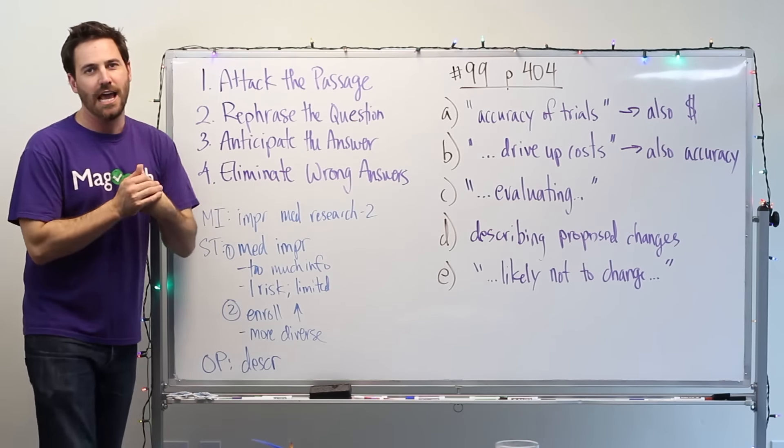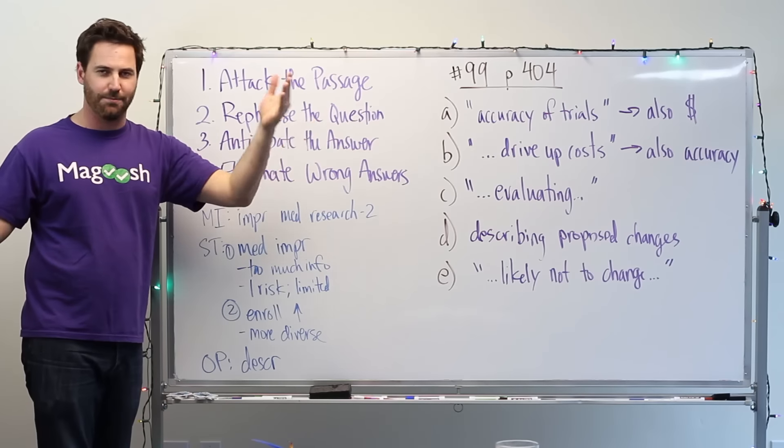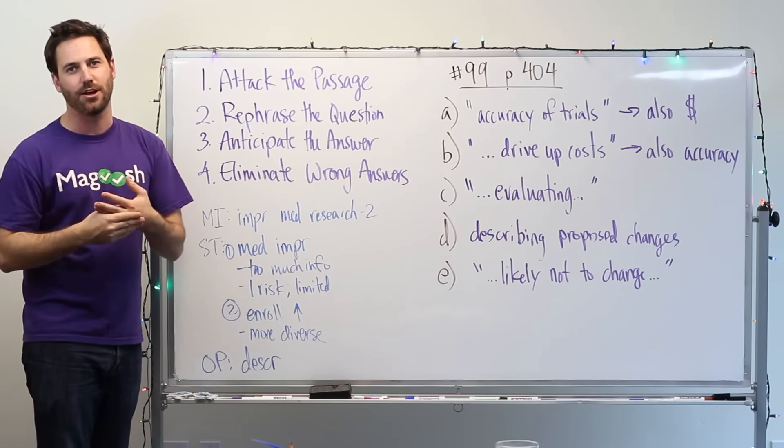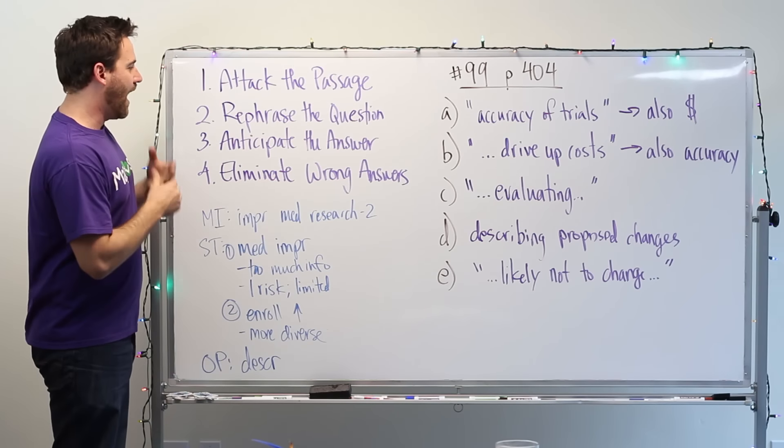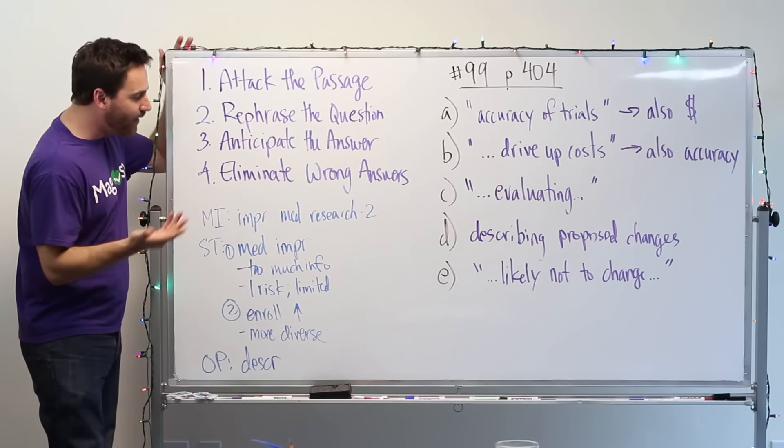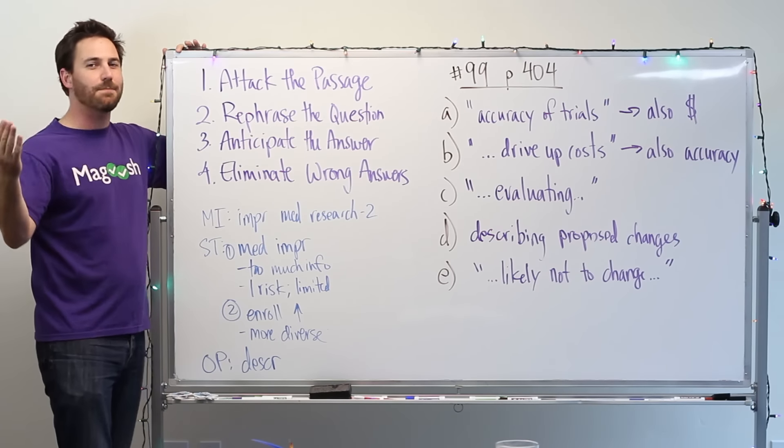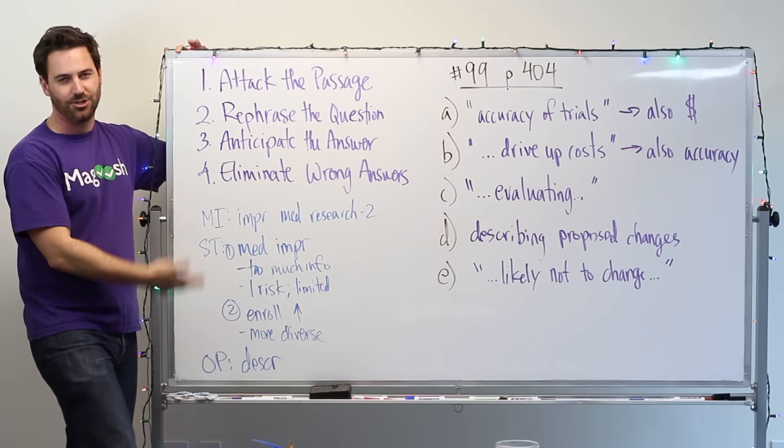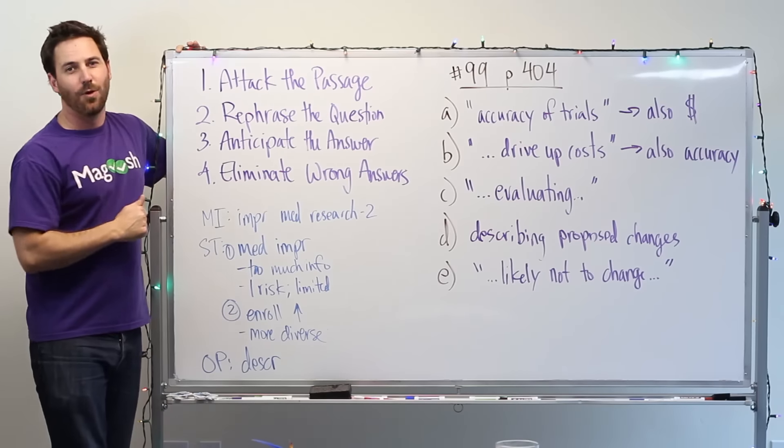Now we want to rephrase the question. Question number 99 is very simple to rephrase. It's what is the primary purpose of the passage? I know that's a main idea question. So I'm going to be focused on sort of high level. What is this whole thing about? I can anticipate the answer. Well, I've already done that. The main idea is improve medical research in two ways. I have anticipated the answer by just following my process and my strategy. So now I'm just ready to go and eliminate the wrong answers.